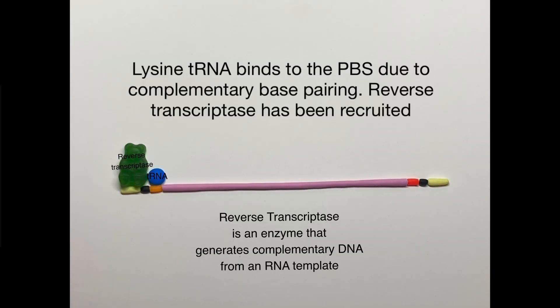Lysine-tRNA has now bound to the PBS due to complementary base pairing, and reverse transcriptase has been recruited. Reverse transcriptase is an enzyme that generates complementary DNA from an RNA template. It has three enzymatic activities: a DNA-based DNA polymerase, an RNA-based DNA polymerase, and an RNase, which degrades RNA. We'll see all three in action.